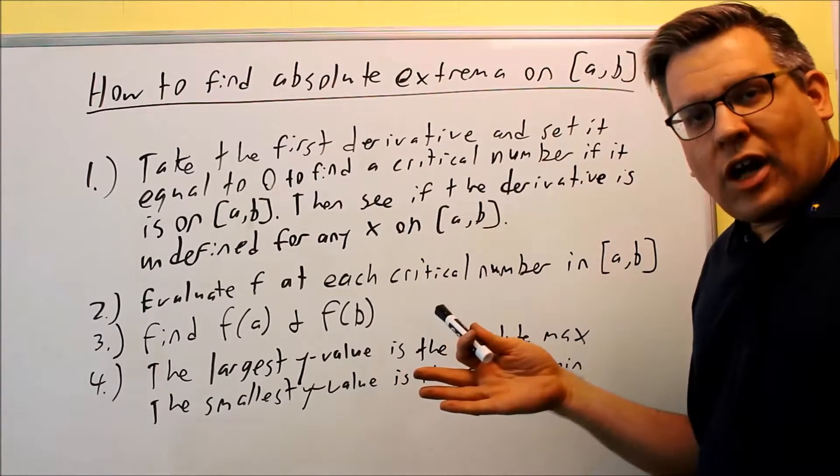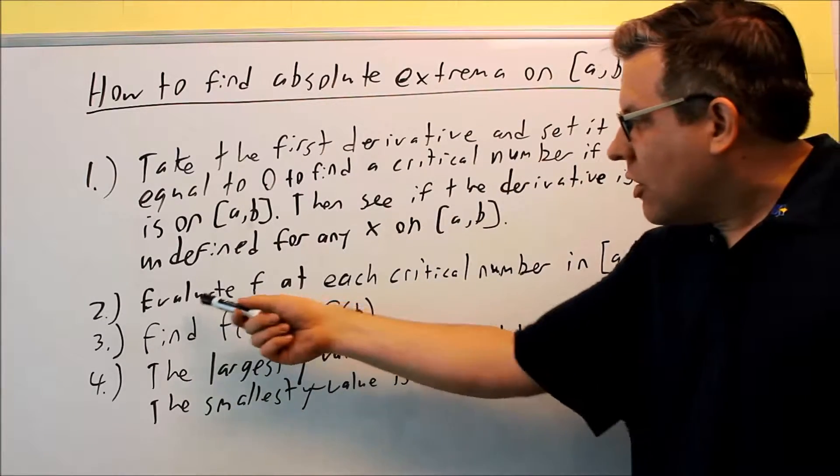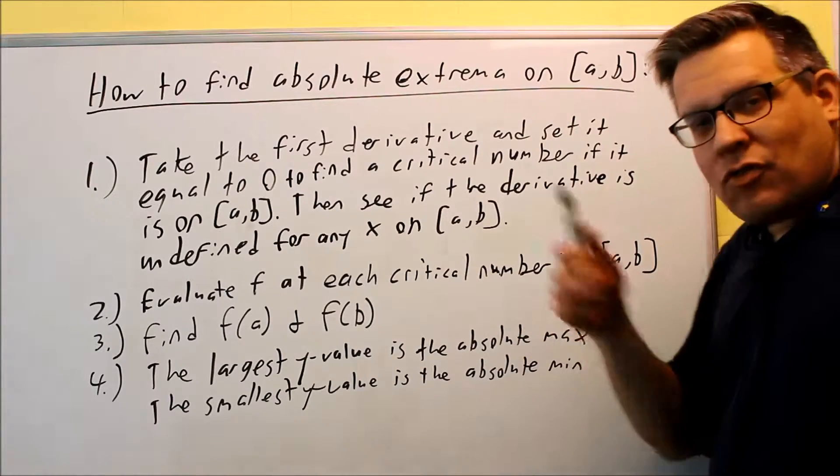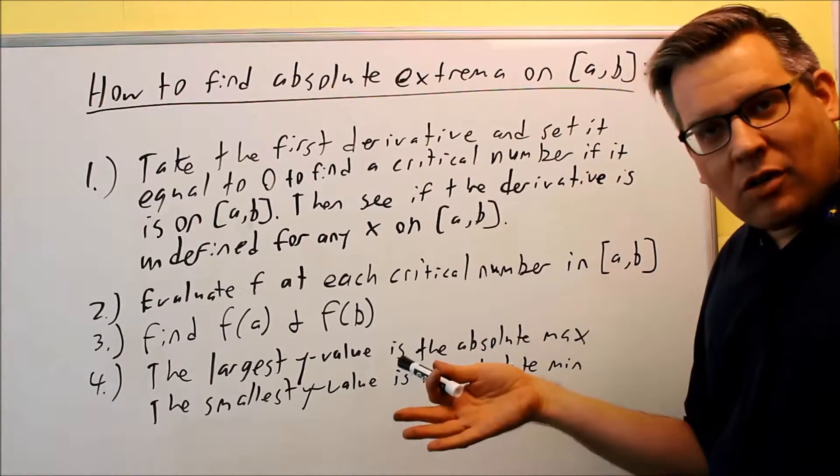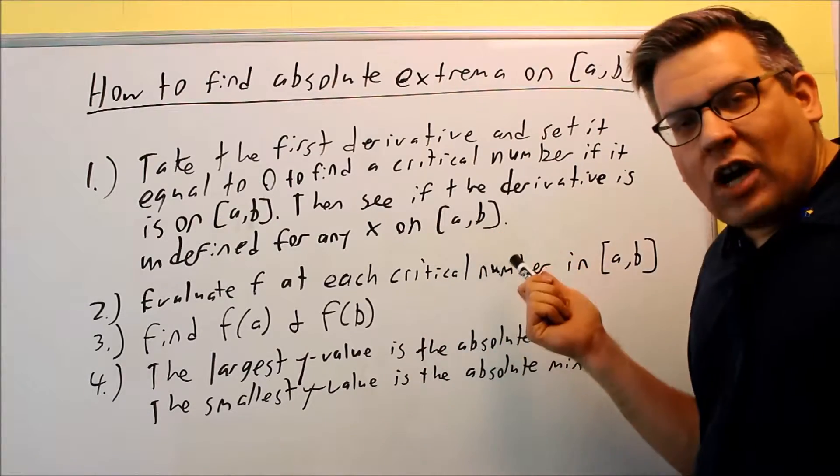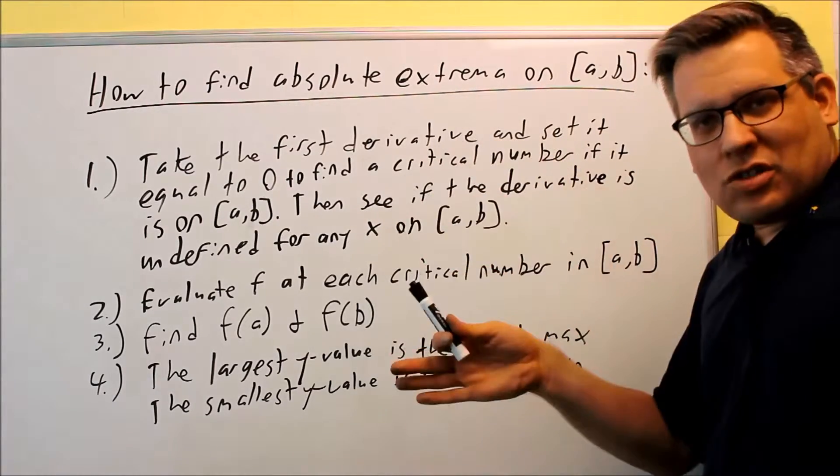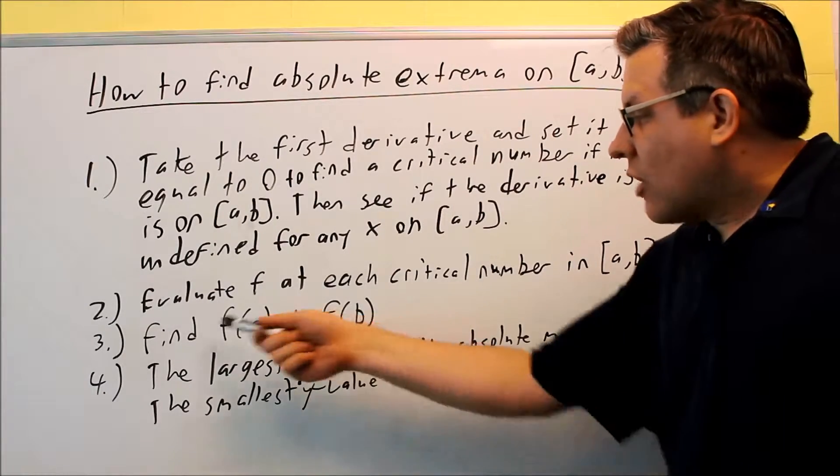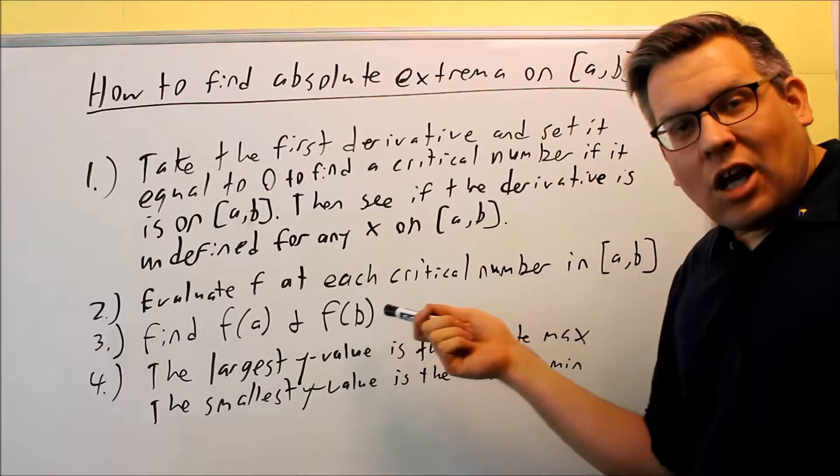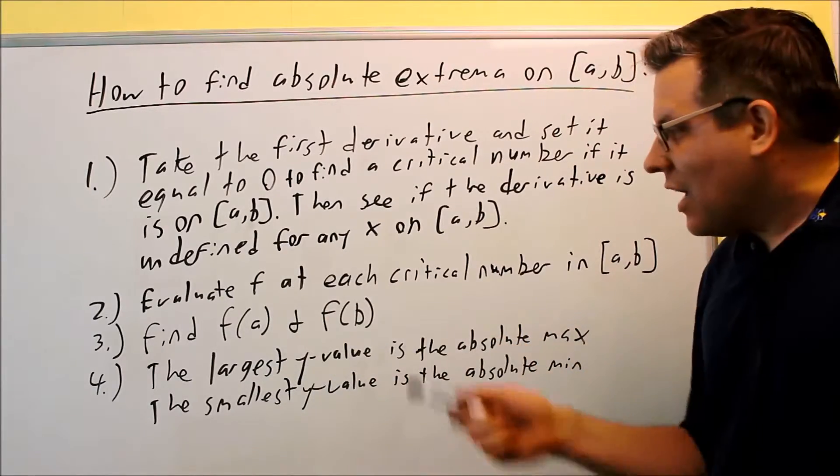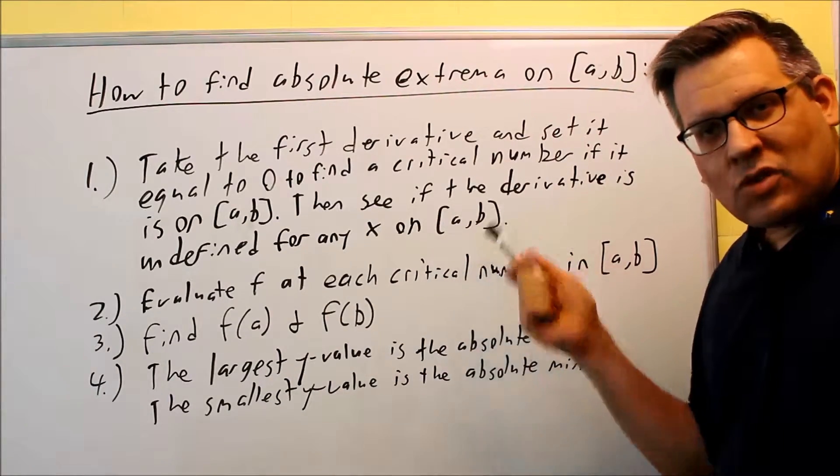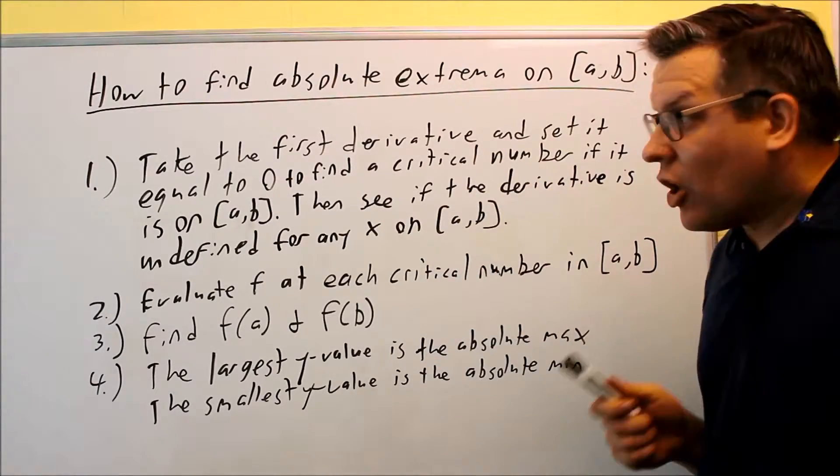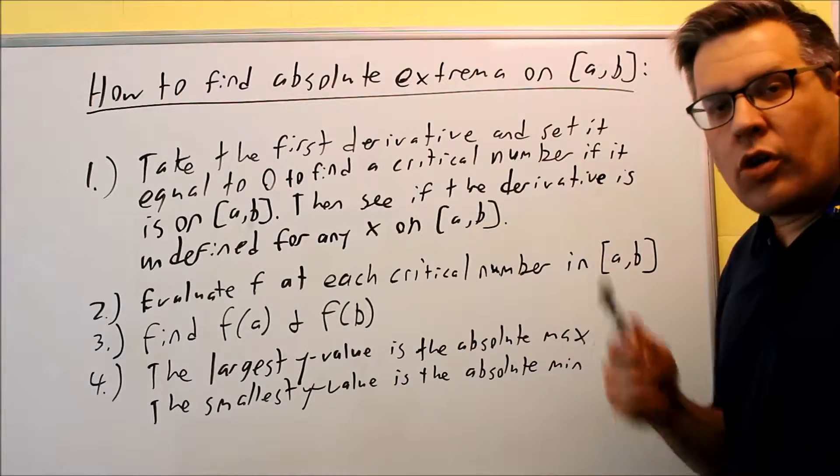Once you find all those critical values, then what you're going to do is you're going to evaluate f at each critical number. You're going to do f of c, however many of them there are. Usually this is done with a table. You're also going to evaluate at the endpoints, so you want to find f of a and f of b because remember this is a closed interval, so your absolute max and min could also occur on the endpoints as well. It may not always occur where there's a critical number.